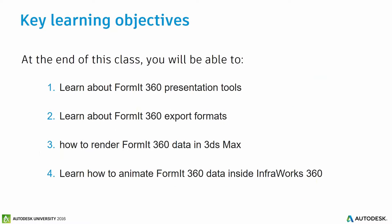I've broken it down into three or four key points: an overview of the current presentation tools inside Formit 360, how to export various file formats and what carries across between applications, how to start rendering in 3ds Max with both internal and cloud rendering, and then InfoWorks 360 for easy animation using bookmarks for walkthroughs — it's built on a gaming engine so it gives you good graphics.